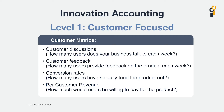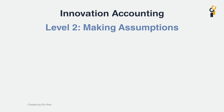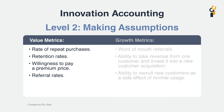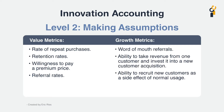While innovating, we have to make assumptions about the product and development in the market which is meant to receive it. Level 2 of innovation accounting is all about measuring the truth of those assumptions. There are generally two types of assumptions we make: value assumptions — what customers will get from the product — and growth assumptions, which is about how new people will find the product. Testing these assumptions is at the core of the Lean Startup approach, which is done through prototyping and minimum viable products used to guide the product's development path.